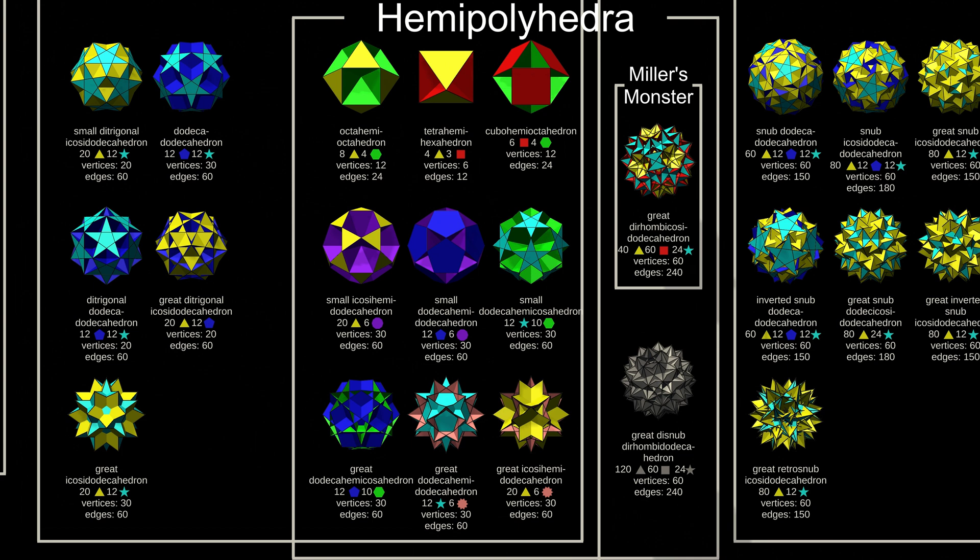Miller's monster is the most complicated uniform polyhedron. It has many characteristics of snub polyhedra, so I've included it in the snub section.